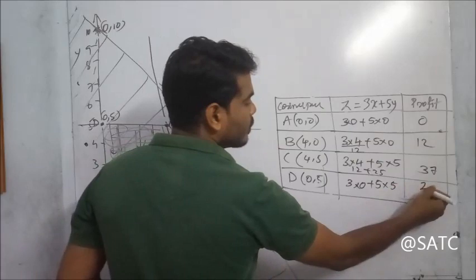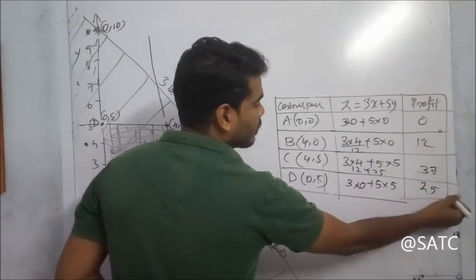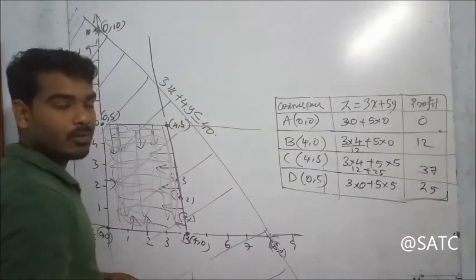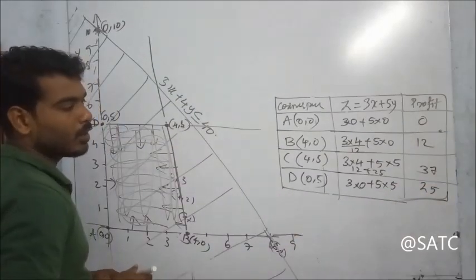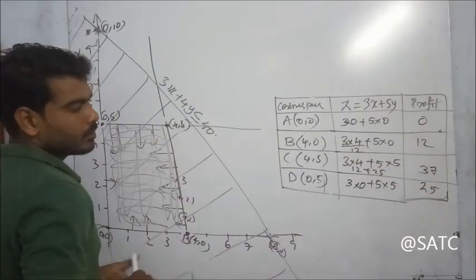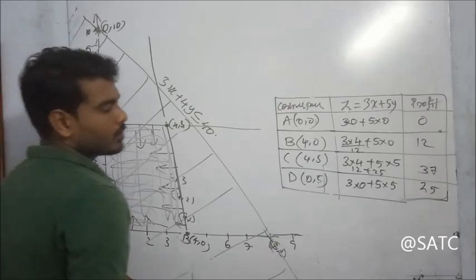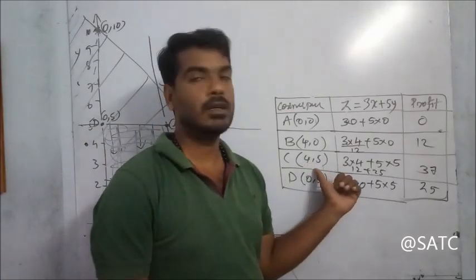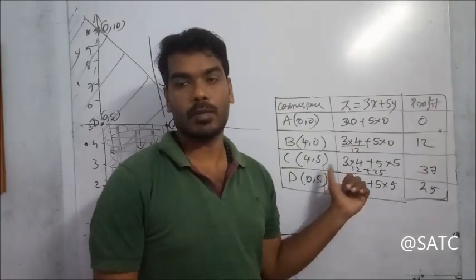At point D, Z equals 25. The optimal solution is at point C, which is (4, 5).